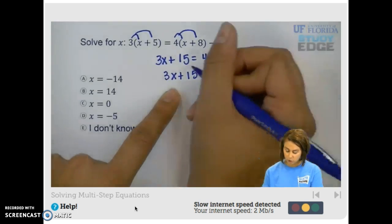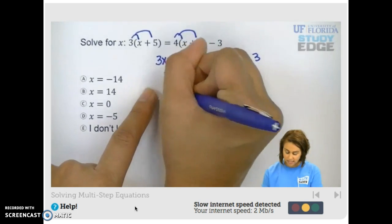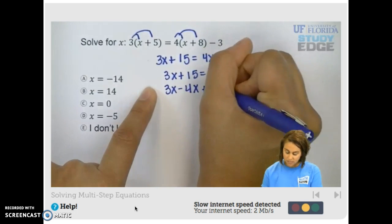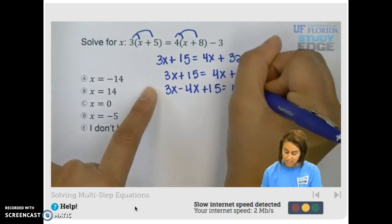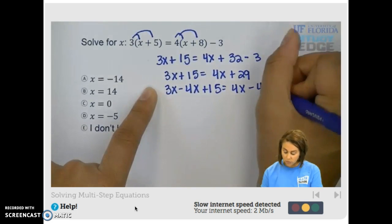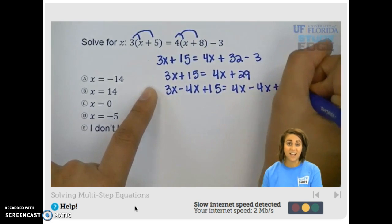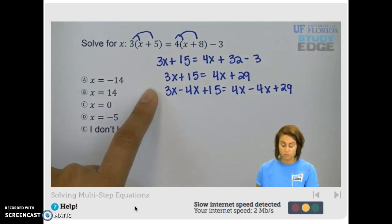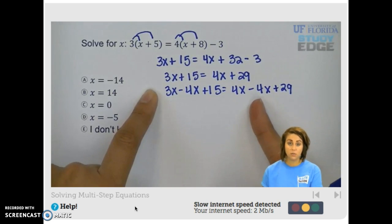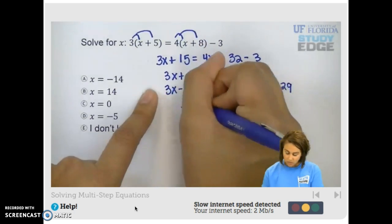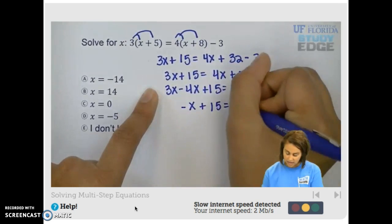One thing we can do is subtract 4x from both sides. If we subtract 4x from both sides, it moves it from the right-hand side to the left-hand side. Because 4 minus 4 is 0, so we have 0x here. And we have a negative x on the left-hand side.